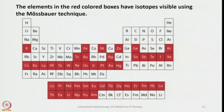Is it possible to do similar studies with other elements in the periodic table? Yes — there are quite a few elements one can study using Mössbauer techniques. Those marked in red in the periodic table can all be used with Mössbauer spectroscopy to observe nuclear transitions and understand nuclear structure.